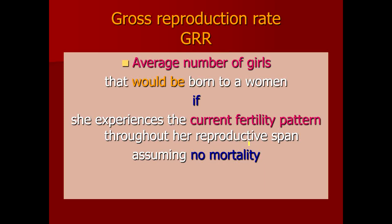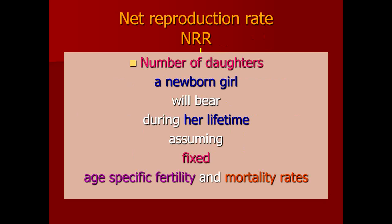Another measure is the net reproduction rate. You need to know the difference between gross and net reproduction rate. In both rates we are concerned with the number of daughters born, but in gross reproduction rate these daughters are born to women of reproductive age group. In net reproduction rate, we are concerned with the number of daughters a newborn girl will bear during her lifetime, assuming fixed age-specific fertility and mortality rates.